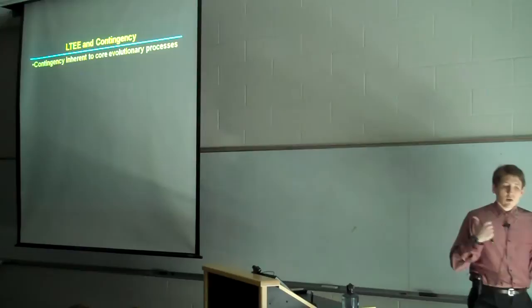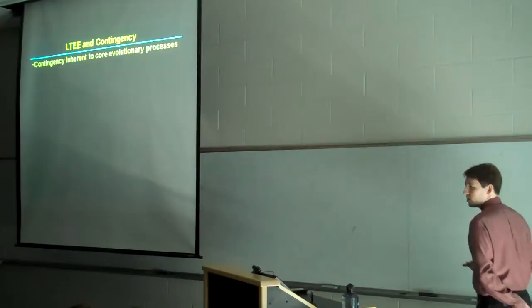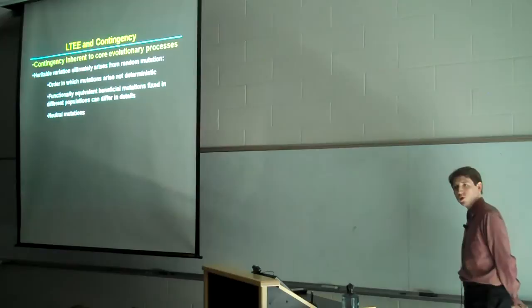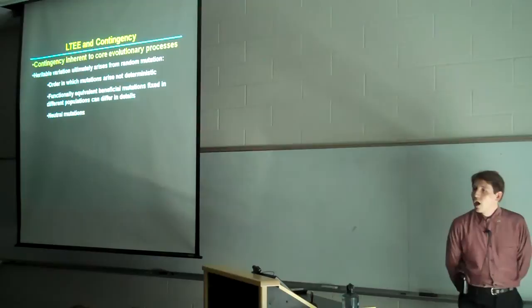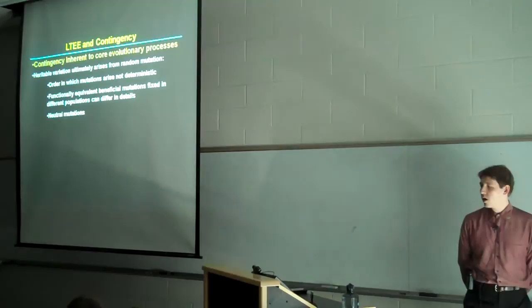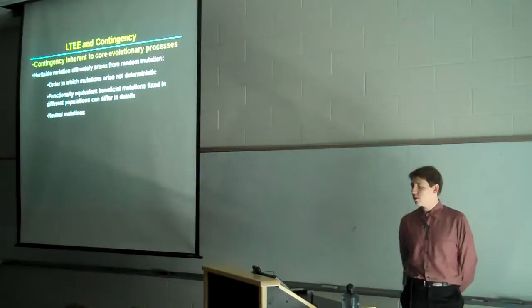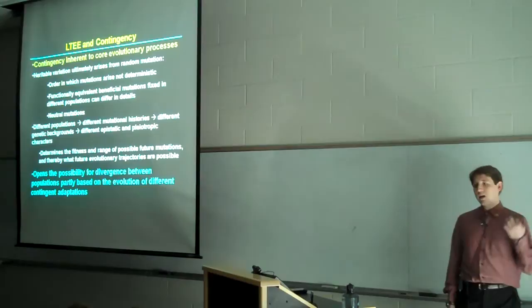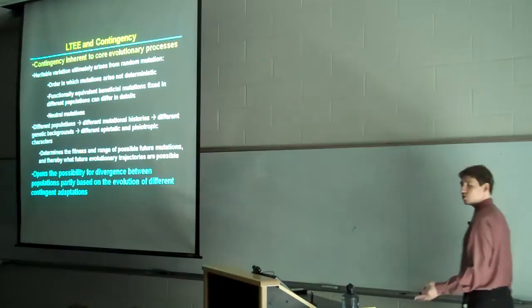As a consequence, the experiment is very much playing the same tape from the same point under the same conditions 12 times simultaneously and doing so under conditions in which only the core processes of evolution are operative. Despite these stringent conditions, contingency can still affect the evolution of these populations because it arises from the very core processes of evolution. After all, heritable variation ultimately arises by random mutation in which the order of mutations is not determined. It's a matter of history and chance. Moreover, the different populations can fix functionally equivalent mutations that are similar in their function but very much different in their details and that can have significant consequences.